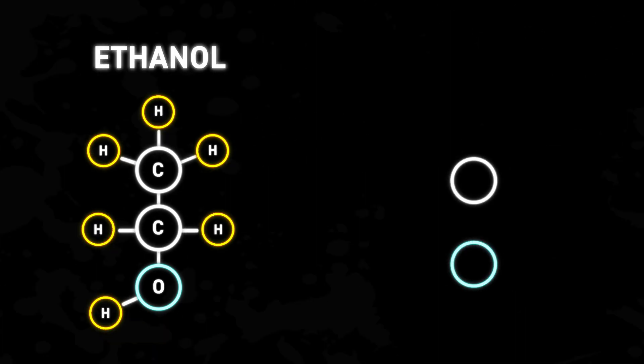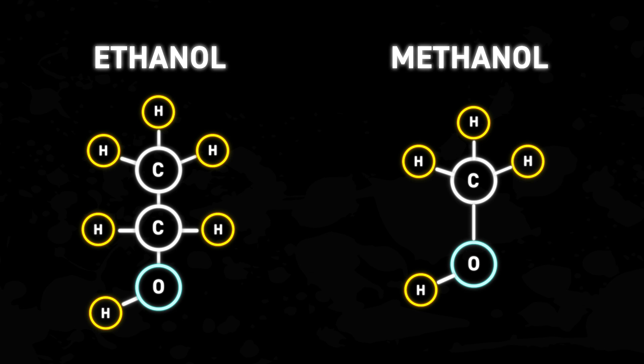The higher the octane rating, the less likely the fuel is to detonate at any given temperature and pressure. We also want to talk about alcohol fuels. The two most common are ethanol and methanol. While these two fuels have similar names, chemically they're quite different — ethanol has twice as many carbon atoms as methanol. Both methanol and ethanol are alcohol fuels, so they're similar in some senses but also very different. And then of course we have gasoline, or petroleum-based fuels, or as we say here in Australia, petrol.